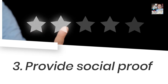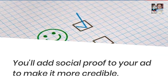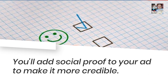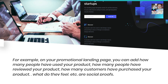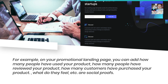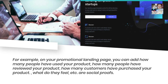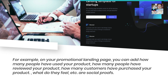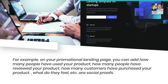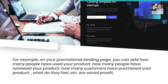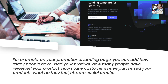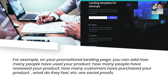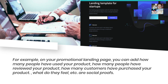Number 3: Provide Social Proof. You should add social proof to your ad to make it more credible. For example, on your promotional landing page, you can add how many people have used your product, how many people have reviewed your product, how many customers have purchased your product, what do they feel — these are all social proofs.